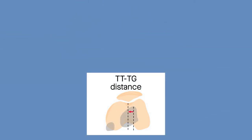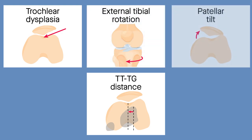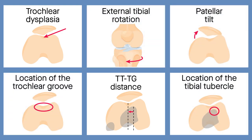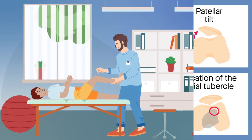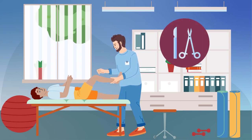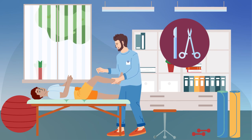While more work is needed to verify this sequence of events, the overall message is clear. TT-TG distance is not a standalone measurement, but rather a multifactorial one that is influenced directly or indirectly by trochlear dysplasia. Therefore, procedures designed to correct a lateral tibial tubercle appear to be more of a compensatory procedure than a way of addressing a real pathology.